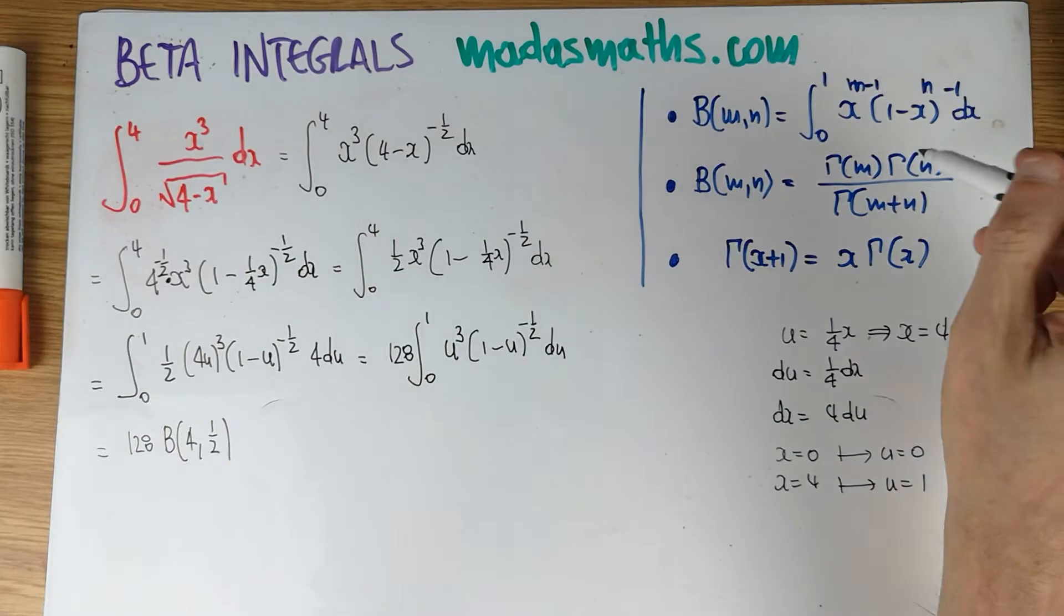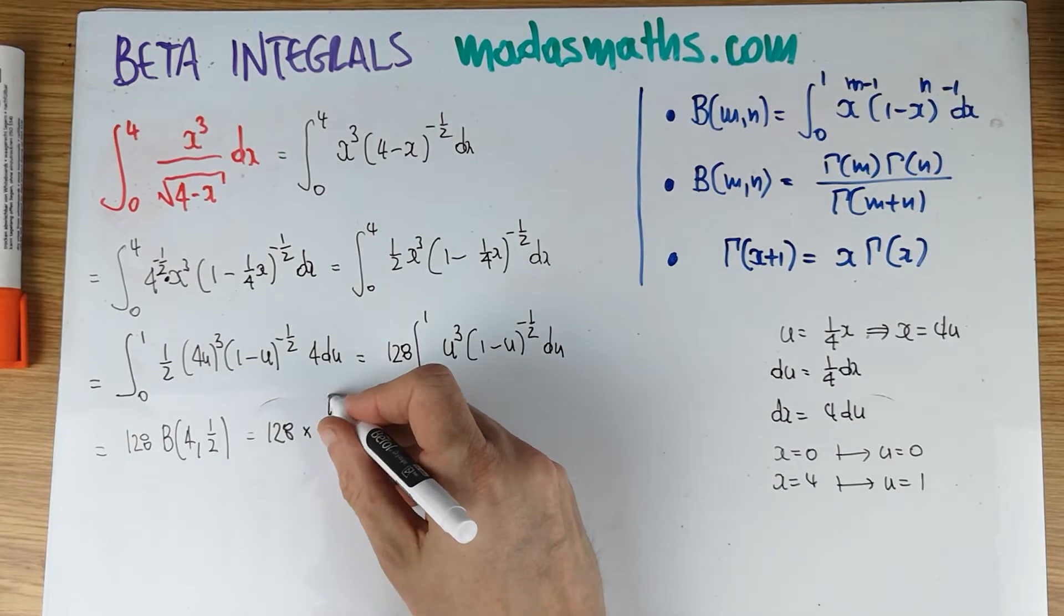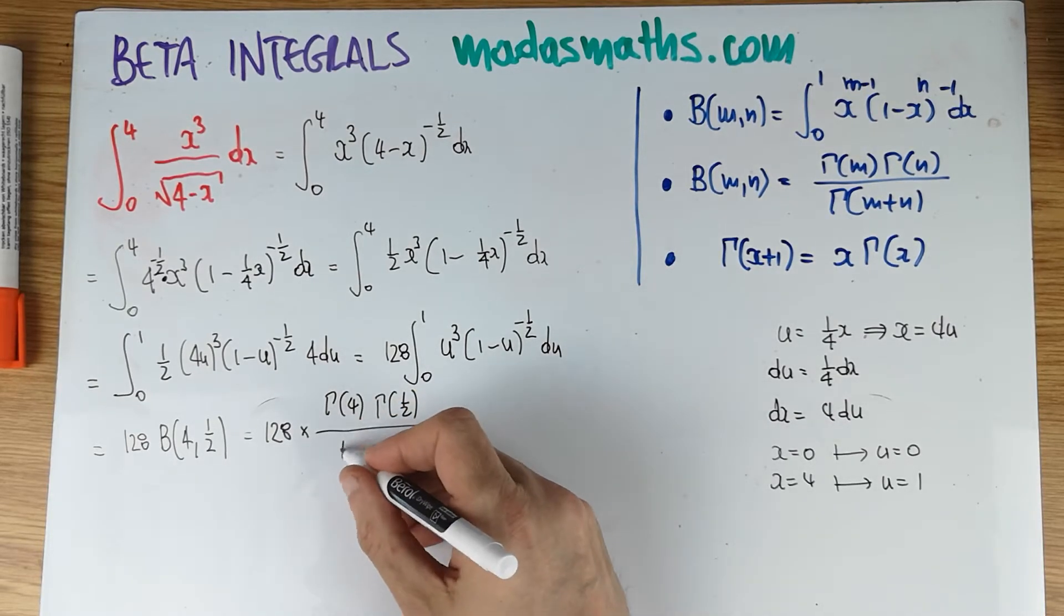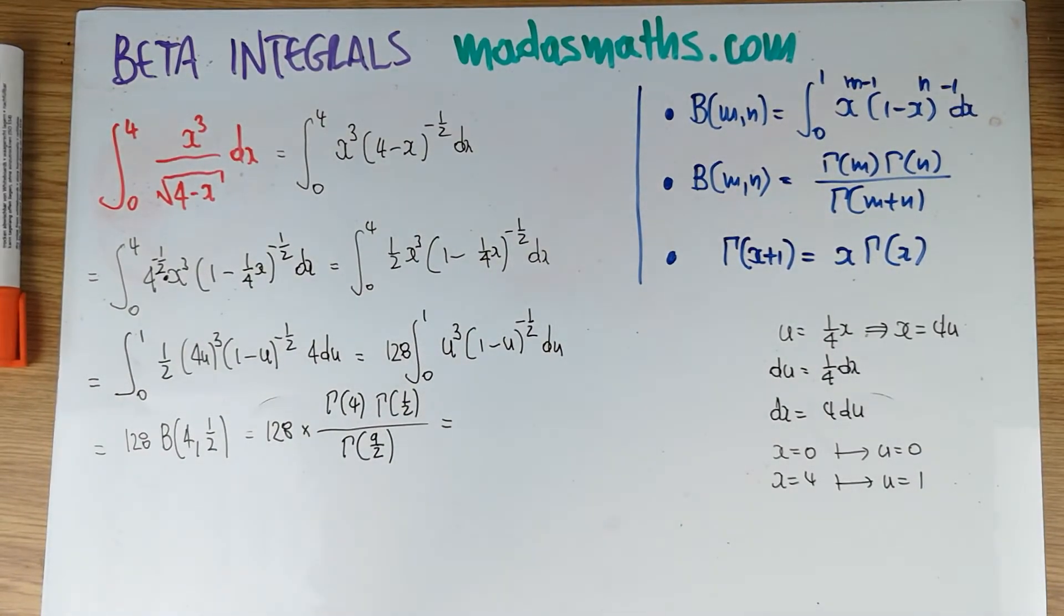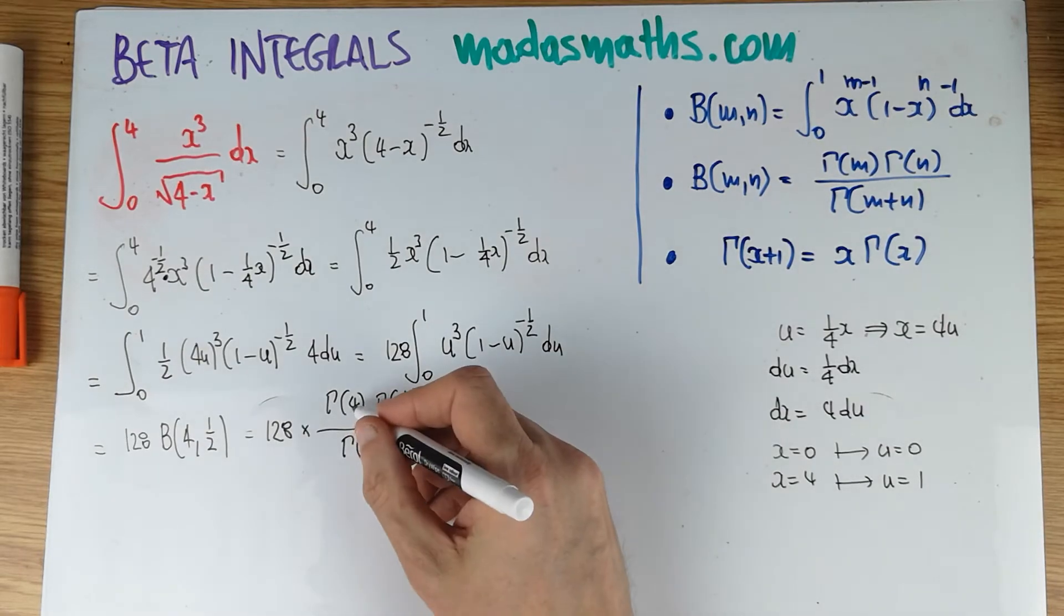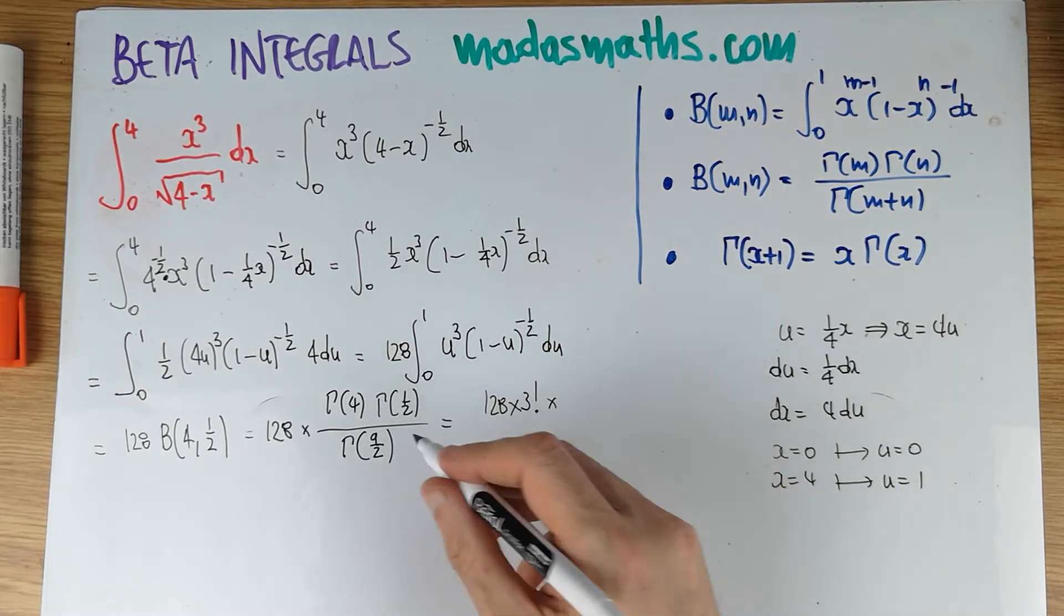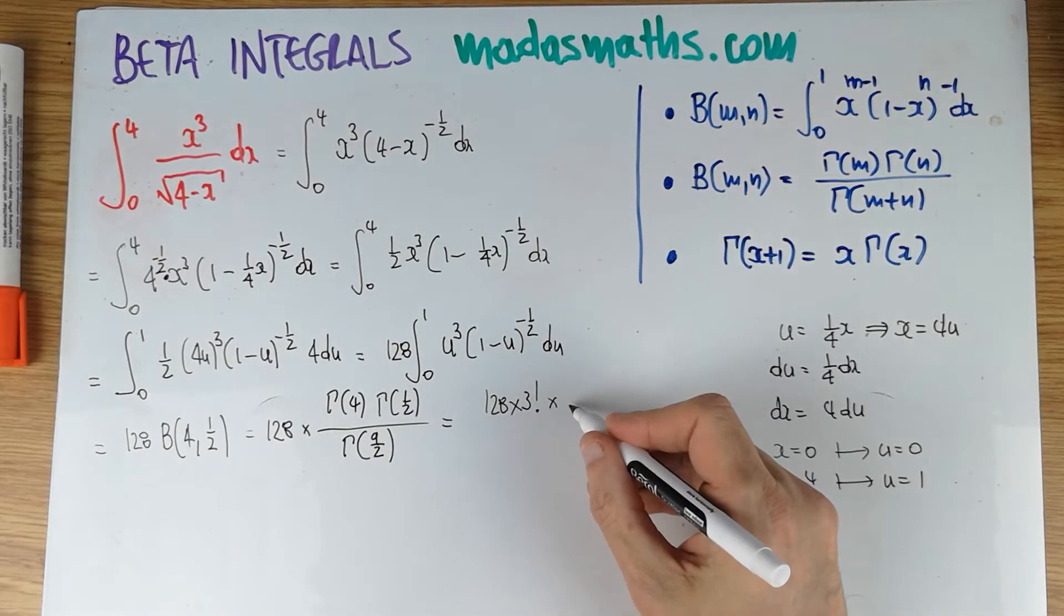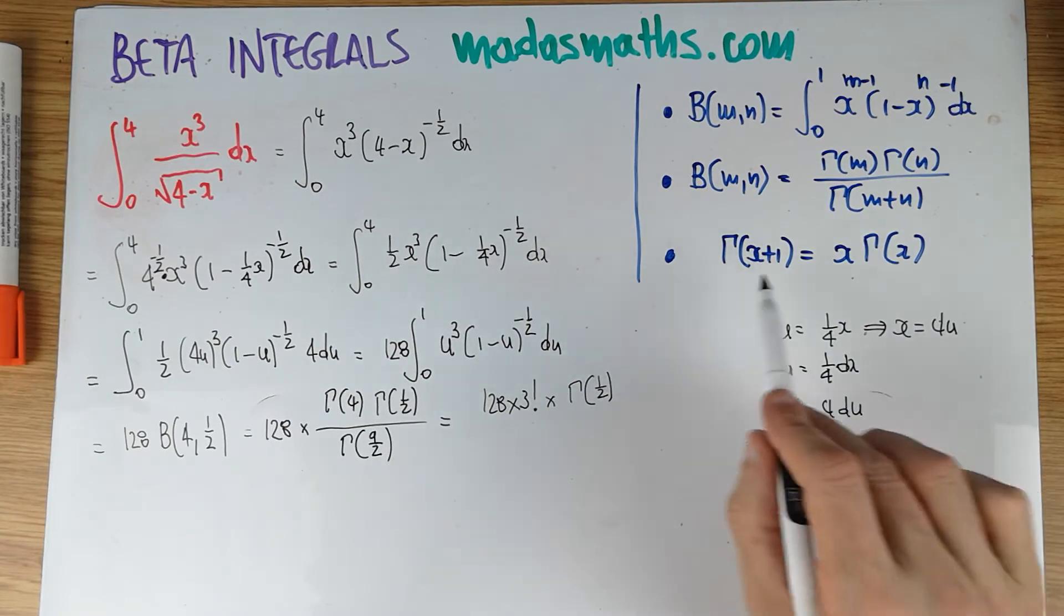Now, to evaluate that, we use, of course, we're going to switch into gammas. So that's 128 times the gamma of 4, the gamma of a half divided by the gamma of 4 and a half. That's 128. That's 3 factorial. That's the gamma of 4. And the gamma of a half, it's a well-known fact, is the square root of pi. But I don't actually need to evaluate it because this will reduce to the gamma of a half and I can cancel it. So I'm going to use the recurrence relation.